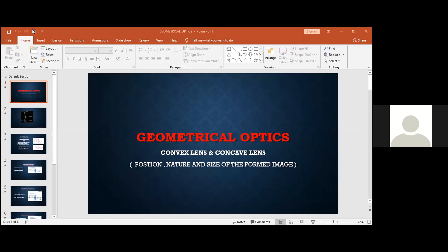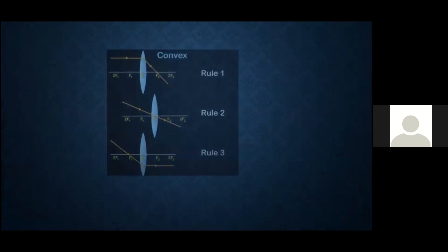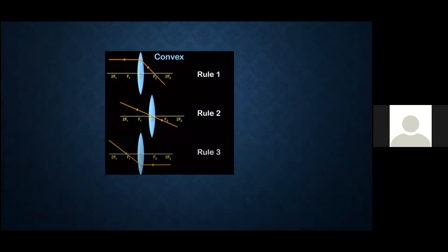Can you see the screen? Yes, we can. Assalamu alaikum, everyone. Today I'll explain about the convex lens and the position, nature, and size of the formed image. First, we all have to know that the convex lens is always converging. So the rays that are going to cross through this lens will always get converging — the rays will always converge.